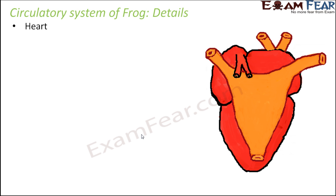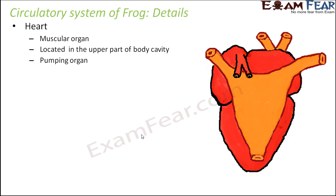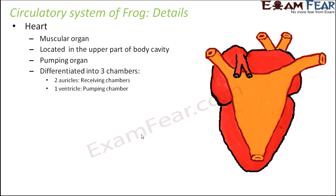The heart is a muscular organ located in the upper part of the body cavity. Muscular contraction and expansion help in pumping the blood, which is why it is the pumping organ. The frog's heart is differentiated into three chambers: two auricles and one ventricle. This is different from the human heart, which has four chambers — two auricles and two ventricles.